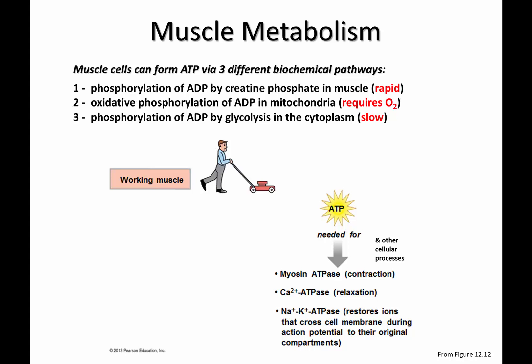The other two processes require more time. Because you have a fast process that can kick in immediately, it can buy you some time to let the other two processes work. You take phosphocreatine, which is the same as creatine phosphate, and ADP; the enzyme creatine kinase can transfer a phosphate group from phosphocreatine, and you get creatine and ATP.